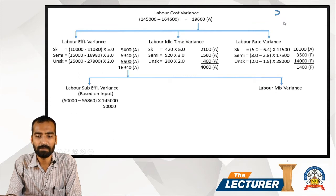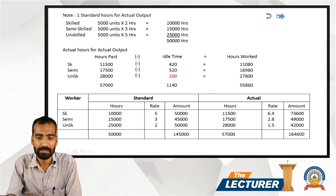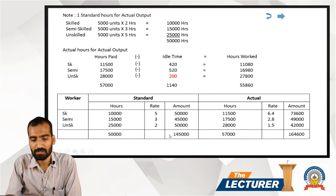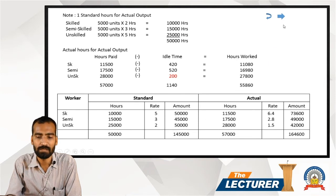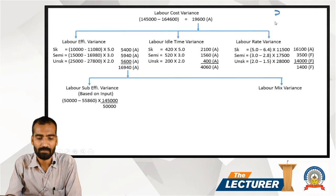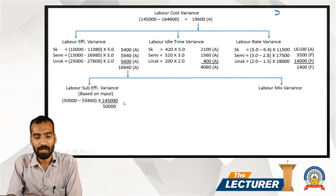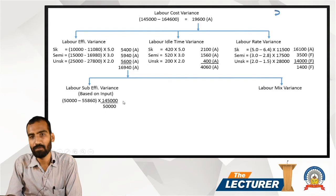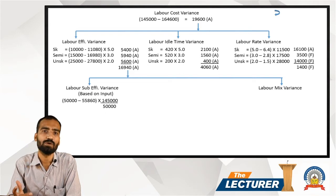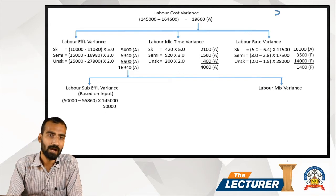The overall efficiency variance uses a composite standard rate = Total Standard Cost ÷ Total Standard Hours = 1,45,000 ÷ 50,000 = 2.9 rupees. The calculation is (50,000 − 55,860) × 2.9, giving an Adverse result.